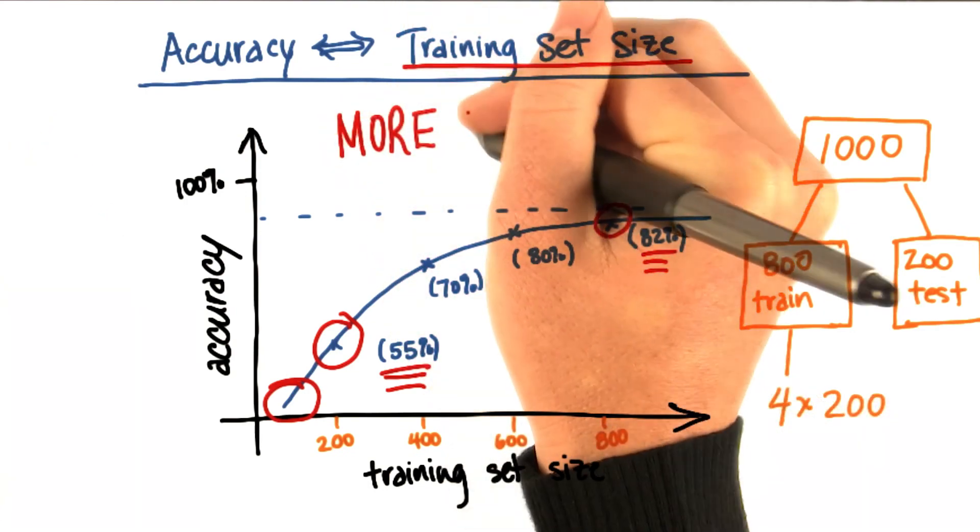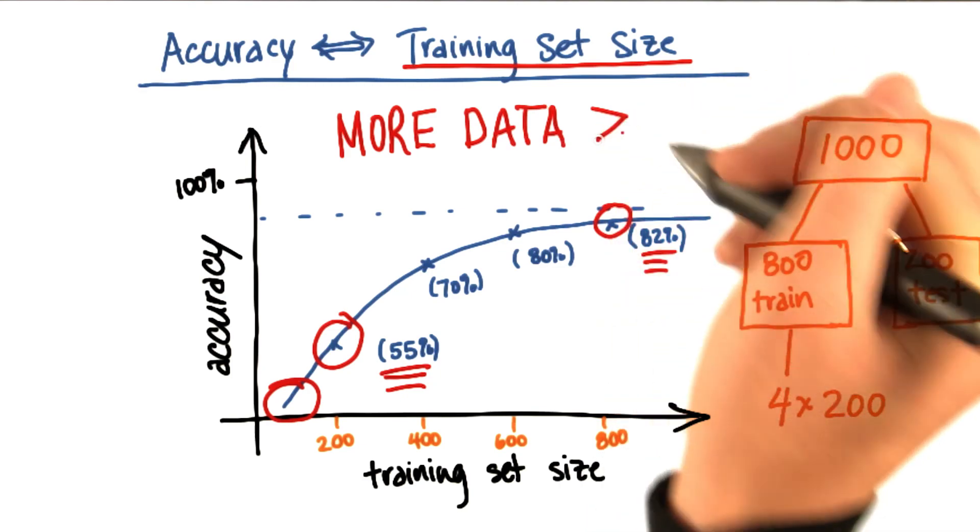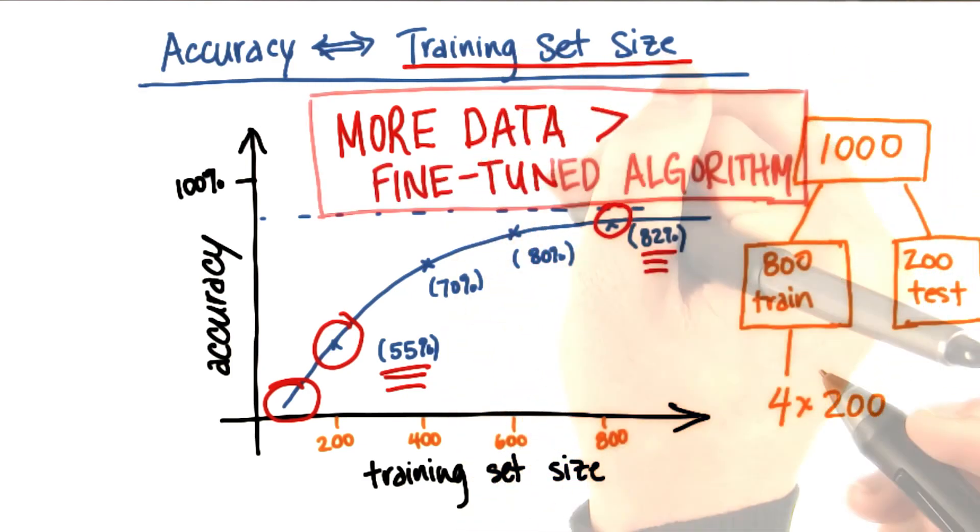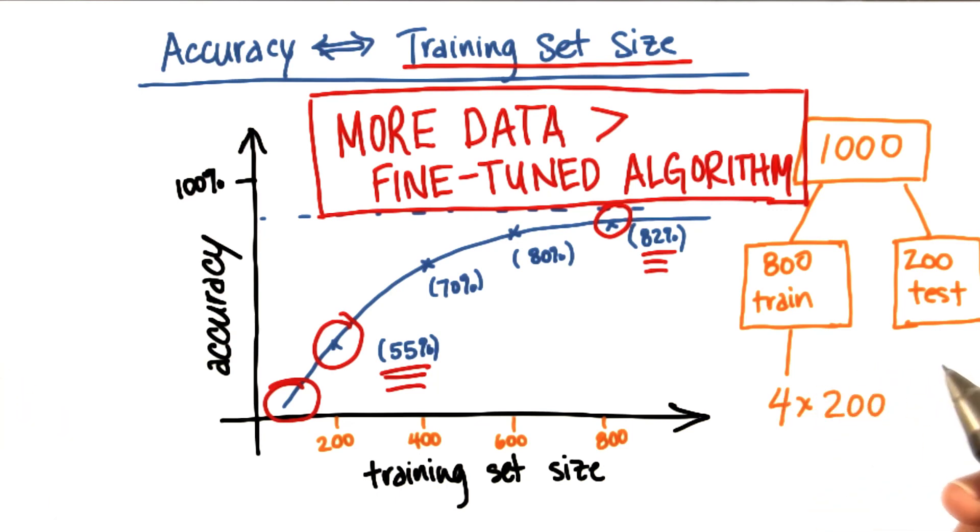And in general, more data is going to give you a better result than a super fine-tuned algorithm. This is something that surprised a lot of machine learning researchers when they first started to discover it many years ago. But it's become a truism of machine learning right now, that being able to use more data will almost always help out the performance of your algorithm.